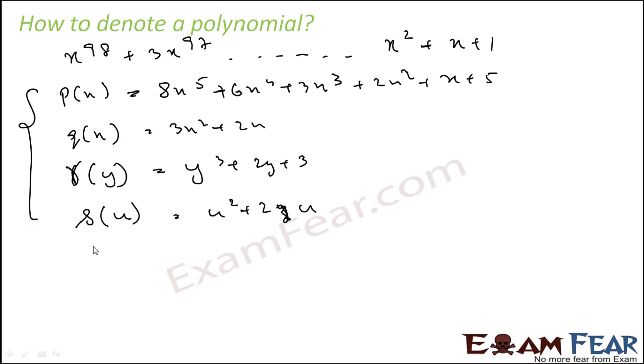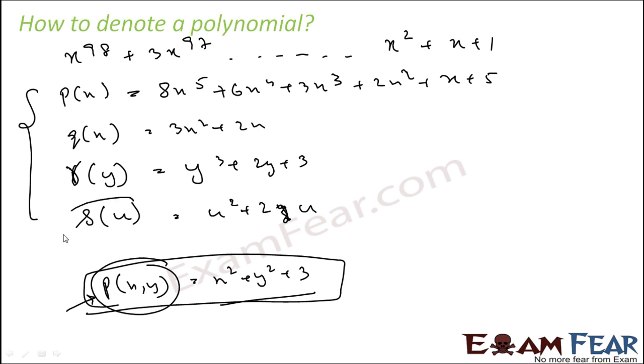This is how we denote it if it is of one variable. If it is of two variables, I can use P(x,y) equals x squared plus y squared plus 3, but we will not use this in this class. Or you can actually remember this. These are ways to denote a polynomial.